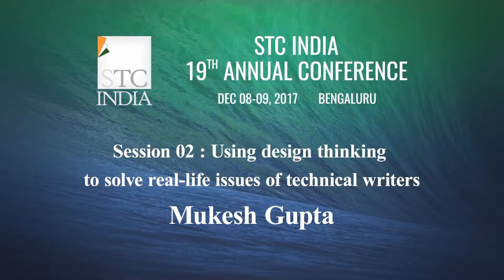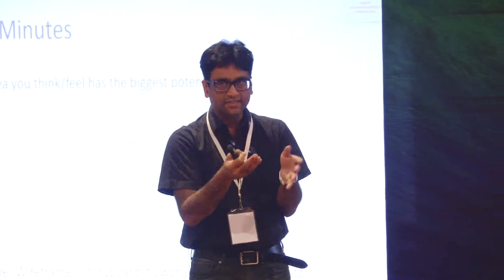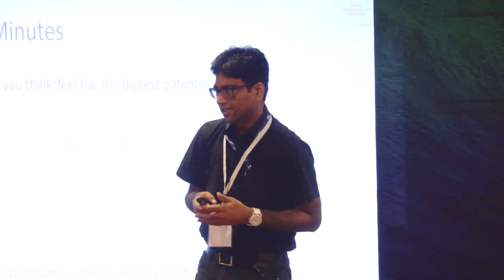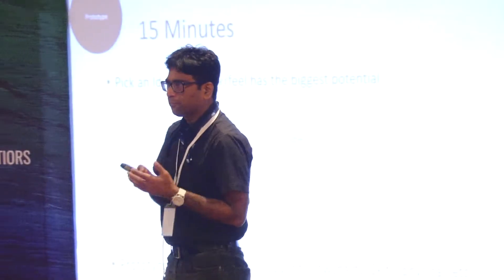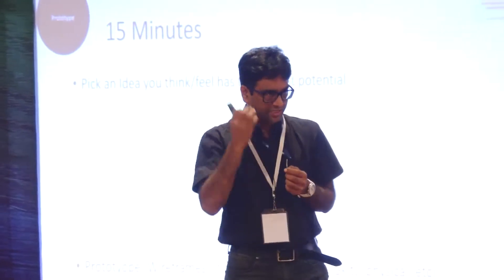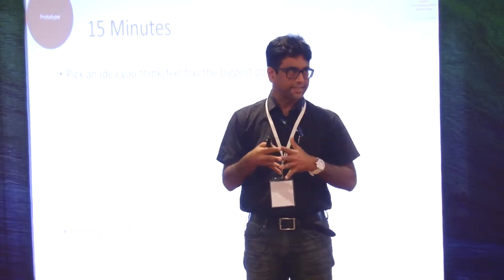Divergent and convergent thinking. By ideation, what we did was we went into a divergent thinking mode. We created a lot of ideas — let's say someone has 8 ideas, someone has 10, someone has 15, someone has 25. So the next step is to pick an idea which you will then prototype. This is where you converge again.